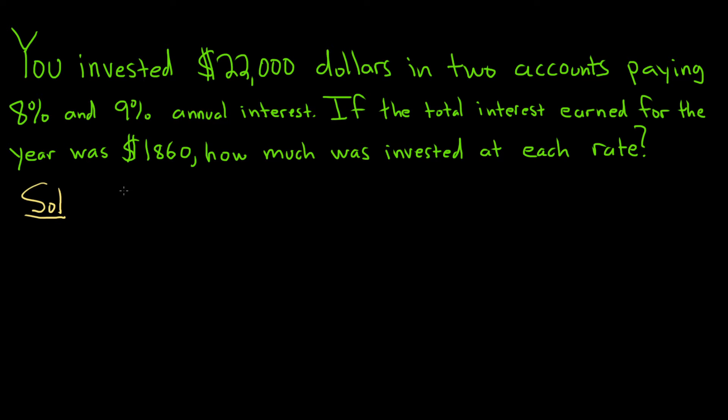Let X be what we're looking for. We're looking for the amount invested at each rate. So X is the money invested at 8%, how much money we actually invest at 8%, and we'll let Y be equal to the money invested at 9%.